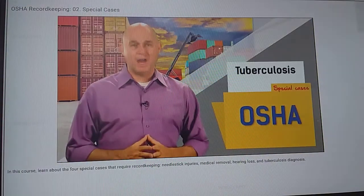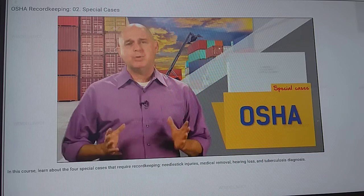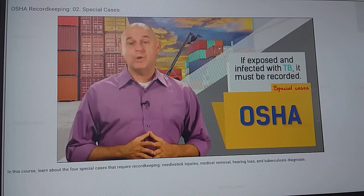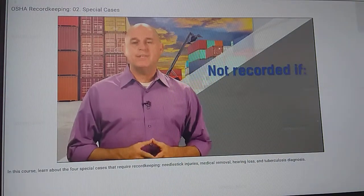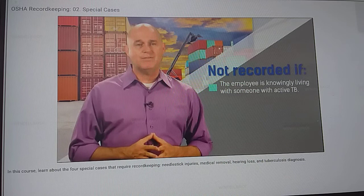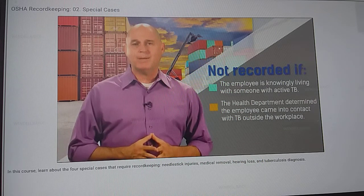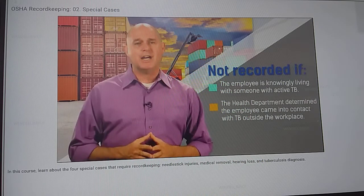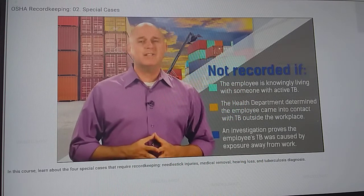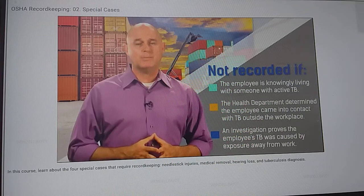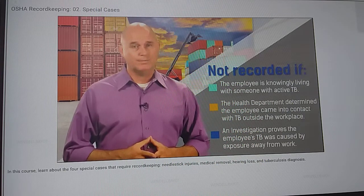Tuberculosis is the final special case designated by OSHA. If an employee has been exposed to anyone with a known case of active tuberculosis and that employee then develops the infection, it must be recorded. TB cases don't need to be recorded if the employee is knowingly living with someone with an active TB infection, the public health department has identified the worker came into contact with an individual with TB outside of the work environment, or a medical investigation proved the infection was caused by exposure away from work.